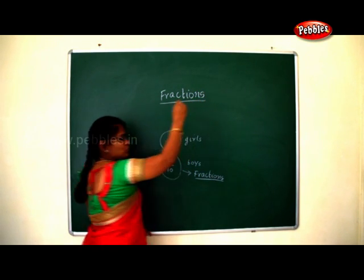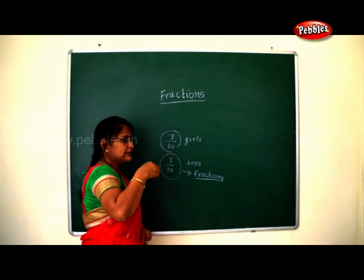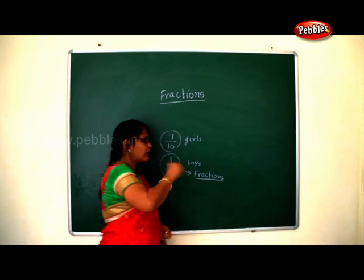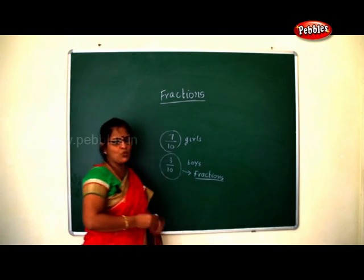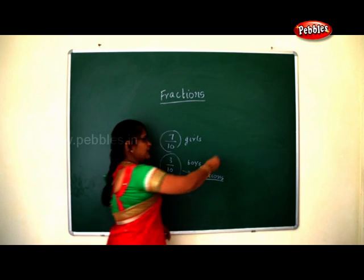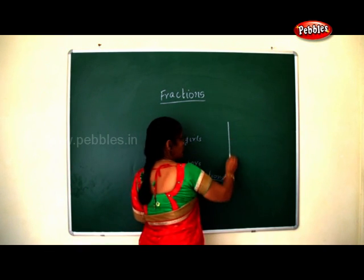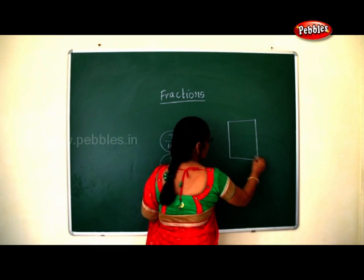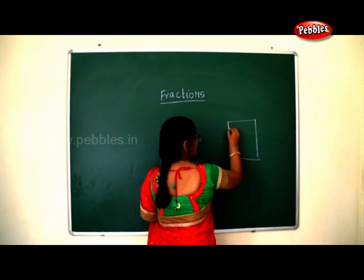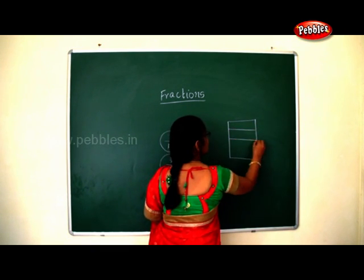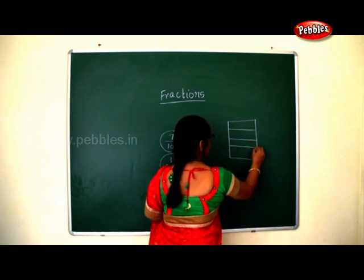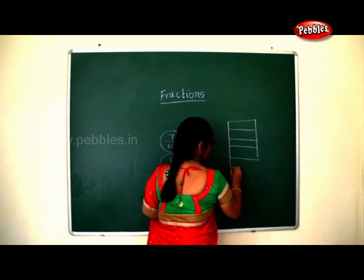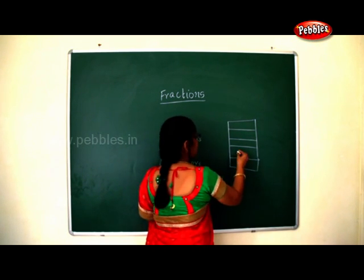And one more story I will tell you. There was a girl called Ranjita. During a holiday she wanted to help her mother. There was a small wardrobe in her house with five shelves — one, two, three, four and five.